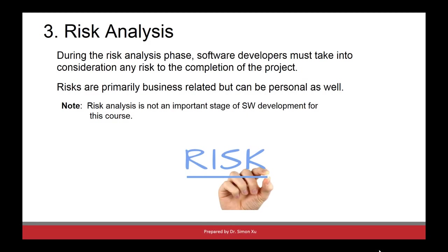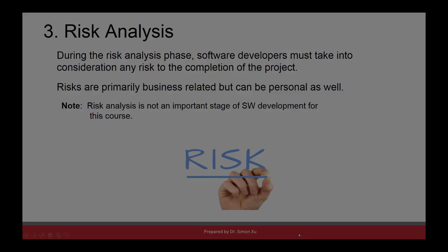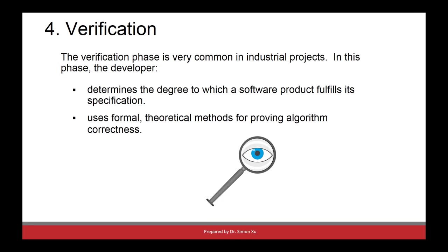In this phase, we need to understand if there is any risk associated with the software project — for example, if key programmers are leaving, or if there is any chance that the company providing the hardware for this software goes bankrupt. Verification is a very common phase in industrial projects. In this phase, we need to use a formal approach to prove that our design is correct.